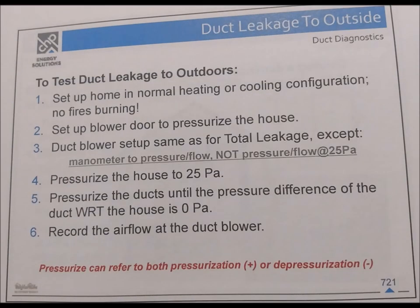Duct leakage to outside test procedure: Set up the home in normal heating or cooling configuration with no fires burning. Set up the blower door to pressurize the house. Set up the duct blaster the same as for total leakage, except using the manometer to measure pressure flow at 25 pascals. Pressurize the house to 25 pascals. Pressurize the ducts until the pressure difference of the duct with respect to the house (WRT) is at 0 pascals. Record the airflow at the duct blaster. Note: 'pressurize' can refer to both pressurization or depressurization.